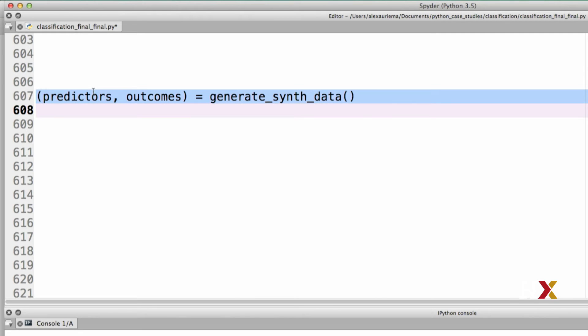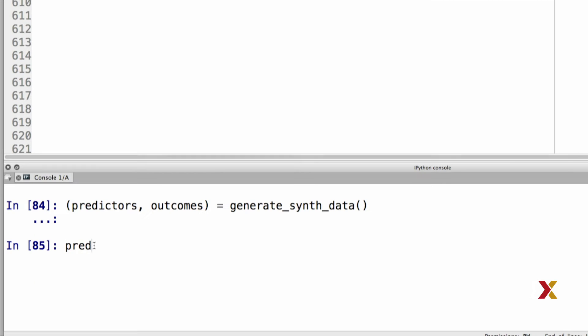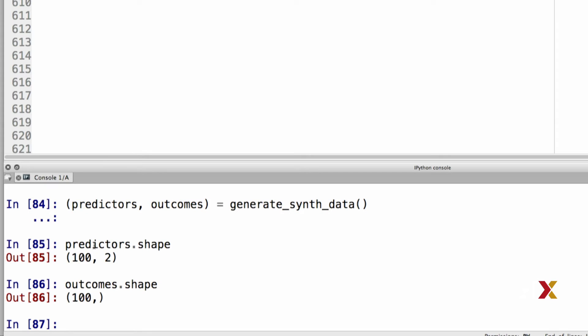We can try running this. Just to be sure, we can look at the shape of our predictors and the shape of our outcomes. And everything looks good so far.